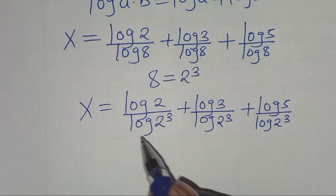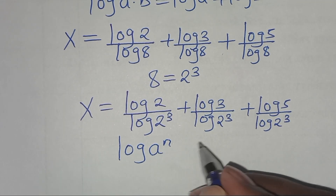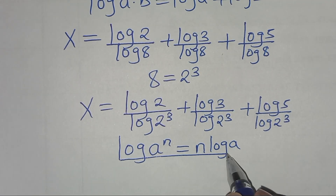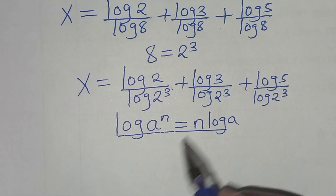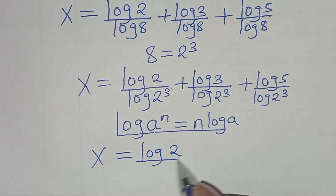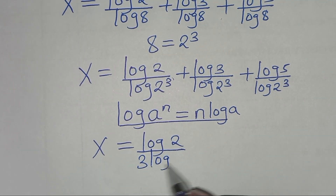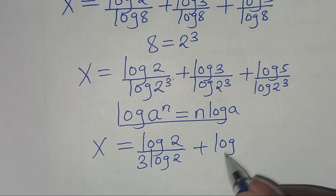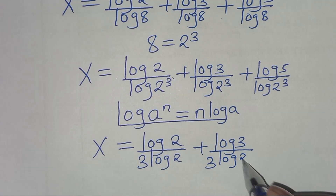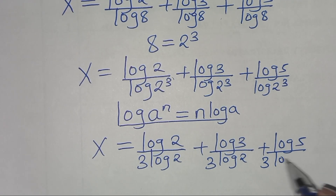The next step is that for log(2 to the power 3), applying the power rule — that is, log(a to the power n) which we can express as n times log a — applying this property, we have x is equal to log 2 divided by 3 log 2, plus log 5 divided by 3 log 2.